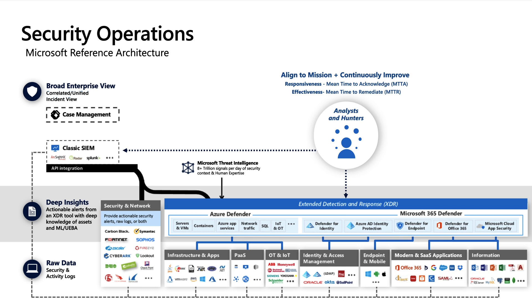XDR incorporates asset-specific data sources like endpoint and memory scans, or snippets of relevant network traffic on domain controllers, but also deep knowledge of asset-specific attacks like pass-the-hash, pass-the-golden-ticket, or endpoint antivirus evasion. It also leverages threat intelligence — those 8 trillion signals from the Microsoft Intelligence Security Graph — along with machine learning and user and entity behavioral analytics tuned specifically to those asset types and attacks.